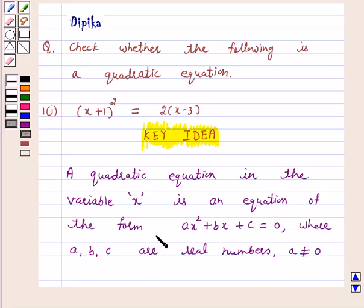We will see whether our given equation can be converted into the form ax square plus bx plus c equals 0. Let's start the solution.